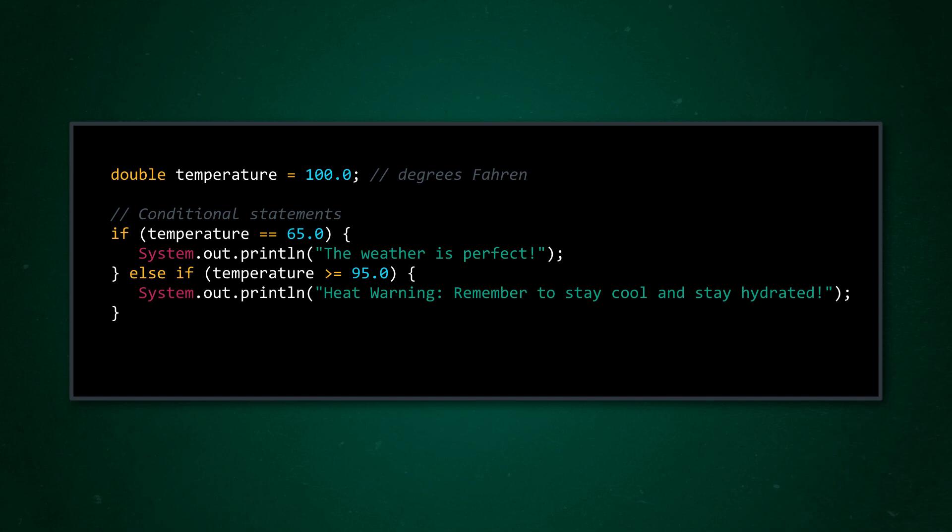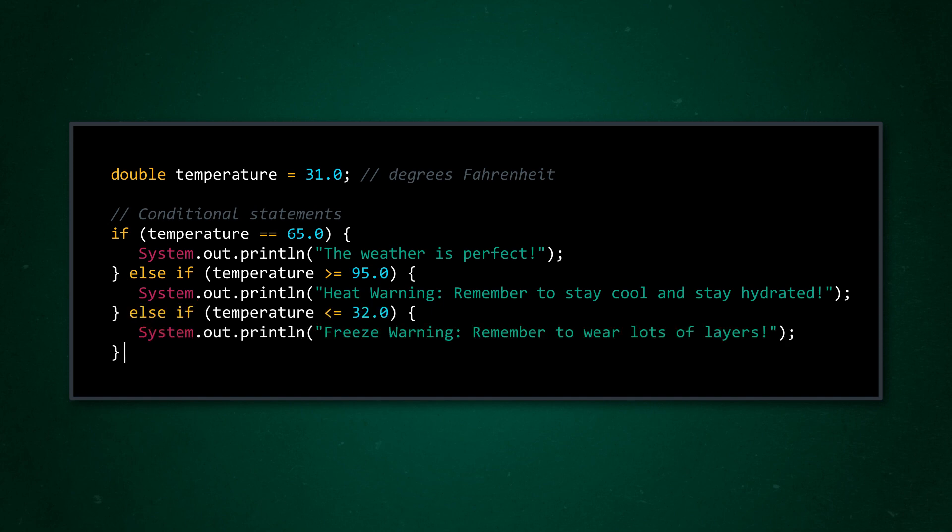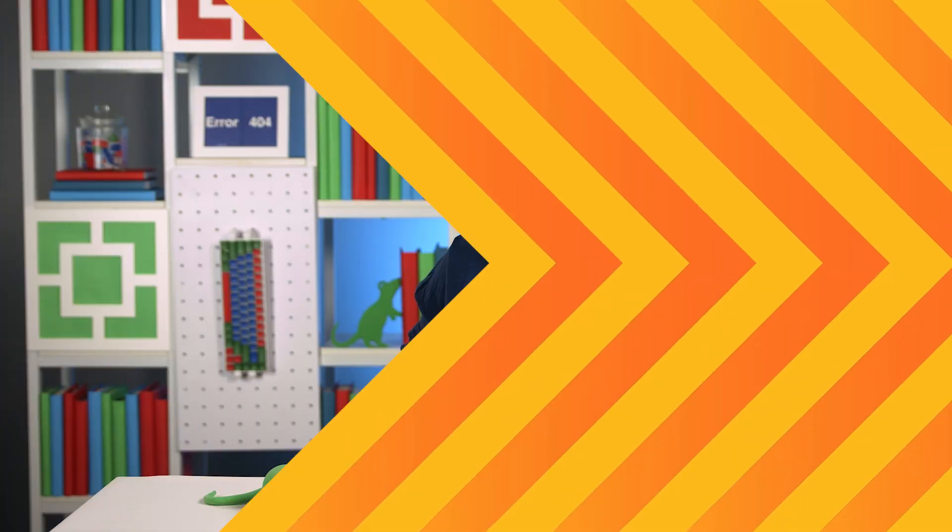For example, we can add some extreme weather warnings to our program too. First, we'll add a heat warning that reminds us to stay hydrated and cool in temperatures at or above 95 degrees. Then we'll also add a warning for the opposite extreme. If the weather hits 32 degrees or lower, our program will remind us to bundle up and beware of ice. These new conditions are pretty similar to our 65-degree check. All we did was change the mode of comparison. We switched from a double equals, which represents equality, to using greater than or equal to and less than or equal to.